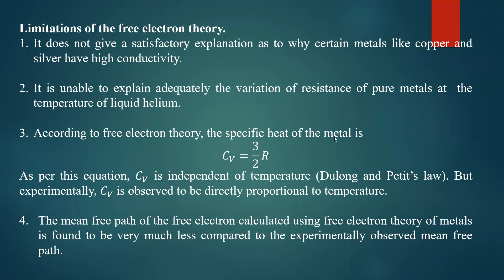The third failure concerns specific heat. According to free electron theory, the specific heat of the metal is given by Cv equal to 3/2 R — similar to the kinetic theory of gases where Cv equals 3/2 R. As per this equation, Cv is independent of temperature. So it says that Cv equal to 3/2 R is constant for all metals, since R is constant. This particular law is called the DeLong and Petit's law.